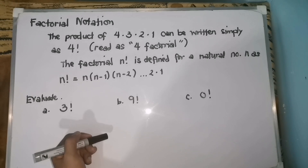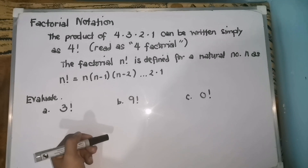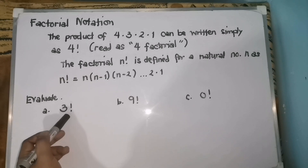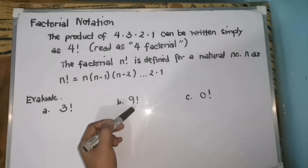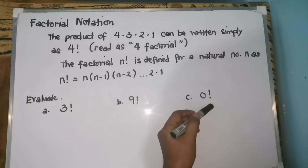But first, we need to learn how to evaluate a factorial notation for us to be able to solve problems regarding permutations and combinations. I have here three examples that we are going to evaluate. The first one is 3 factorial, the second one is 9 factorial, and the last one is 0 factorial.